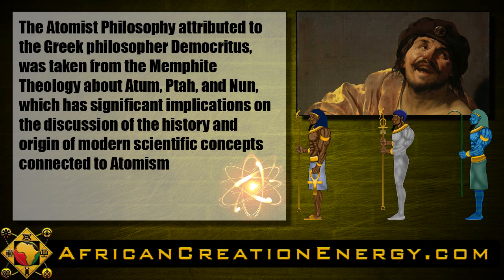In older videos on this channel and throughout the African Creation Energy series of books, we have discussed how the Atomist philosophy, attributed to the Greek philosopher Democritus, was taken from the Kemetic Memphite Theology about Atum, Ptah, and Nun, and the profound important implications that this has on the discussion of the history and origin of the modern scientific concepts connected to Atomism. Another important scientific concept derived from the Memphite Theology of ancient Kemet is that of potential energy and kinetic energy.